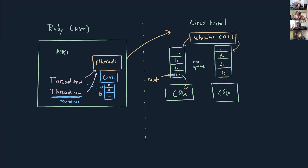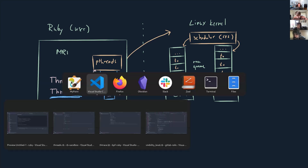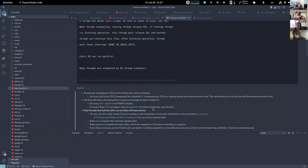Anything you interact with at the Ruby level — like Thread.new — will under the hood call into libpthreads, create a new thread, and tell the Linux kernel to create a new task.